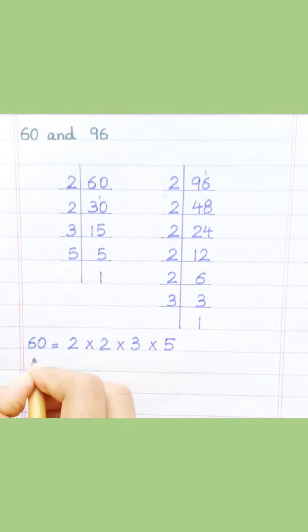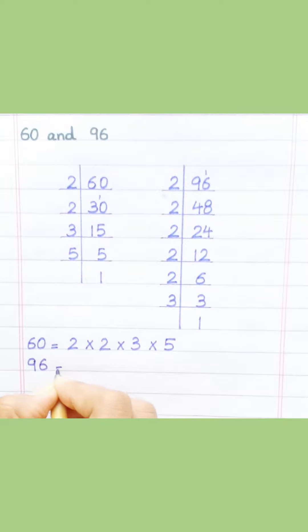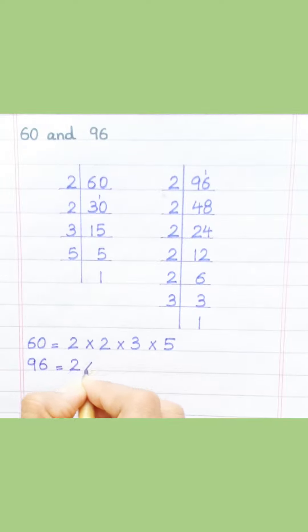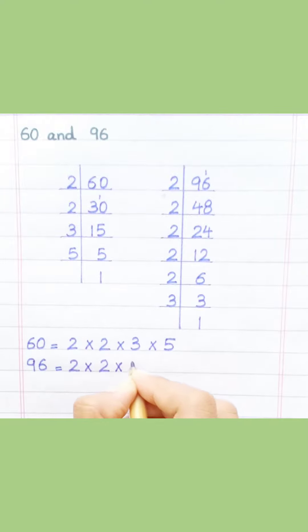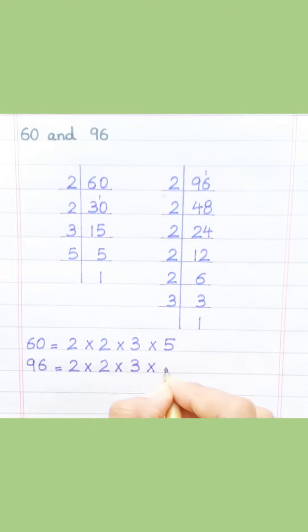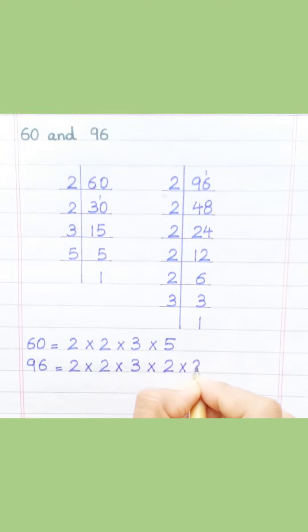96 equals 2 multiply 2 multiply 3 multiply 2 multiply 2 multiply 2.